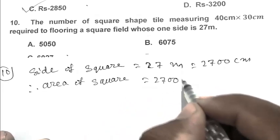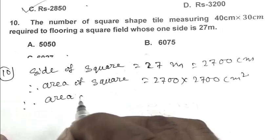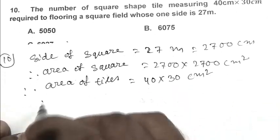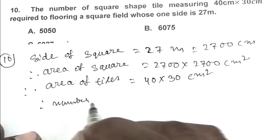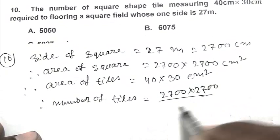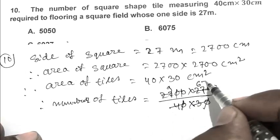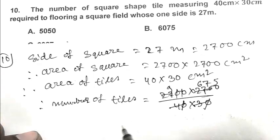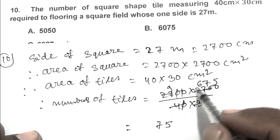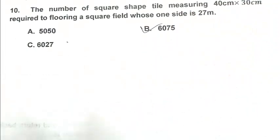Area of tiles, that is 40 multiply by 30 centimeter square. Therefore number of tiles is 2700 multiplied by 2700 by 40 multiplied by 30. It's become 6075. So B is the right answer. Thank you for watching, have a good day.